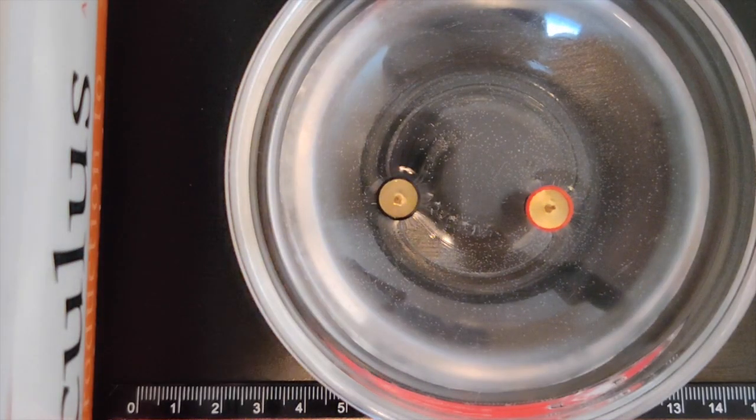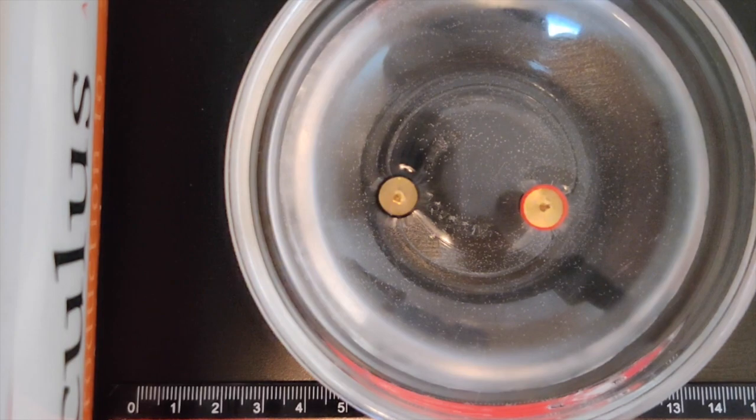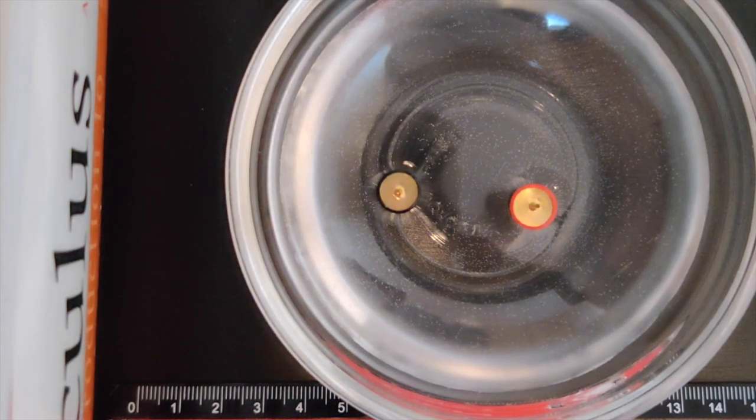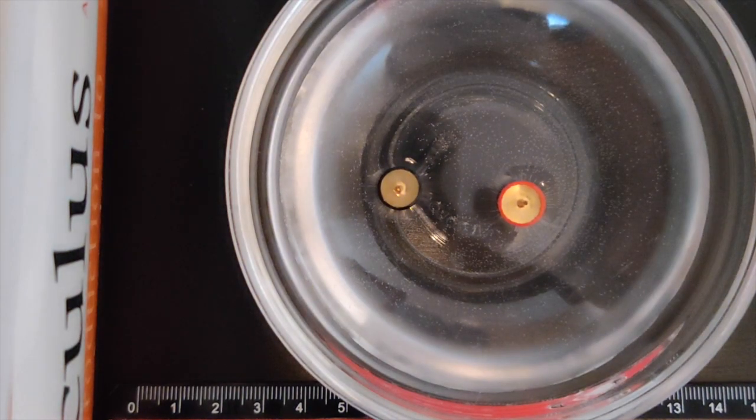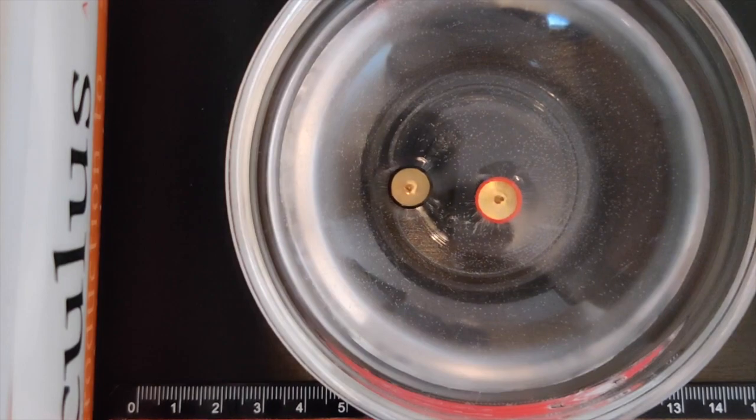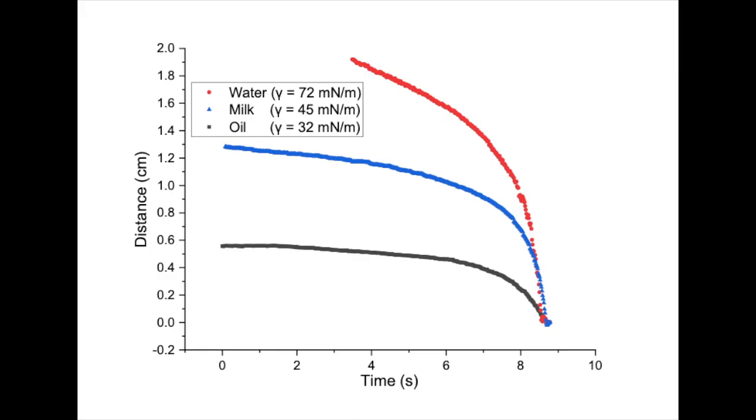In this video clip, you can see part of our experiment. We looked into the movement of two thumbtacks undergoing the Cheerio effect in different liquids with a variety of surface tensions. The distance between the thumbtacks was tracked as a function of time, as can be seen in this graph. You may notice the rapid speedup as the thumbtacks get closer to each other.